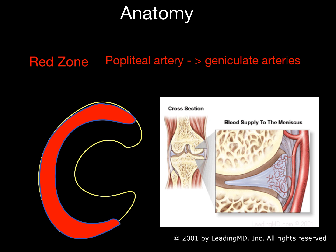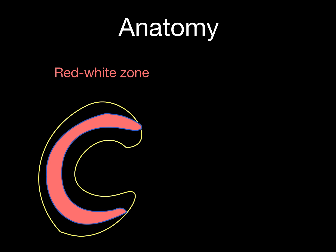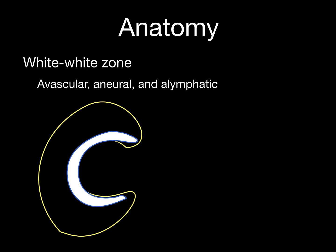One important thing to consider is the vasculature of the meniscus. The peripheral aspect is known as the red zone and is highly vascular. The mid one-third is known as the red and white zone and is partially vascular but less so than the periphery. Finally, the inner one-third is the white zone and is avascular, aneural, and alymphatic. This has implications for possible healing — because it's avascular, it has less chance of healing than tears that occur in the periphery.